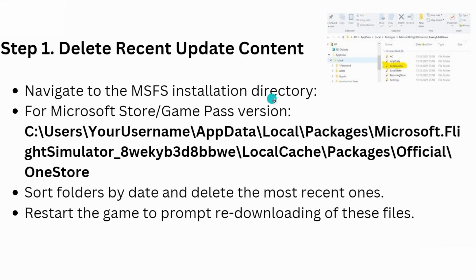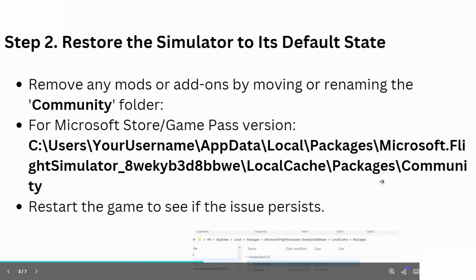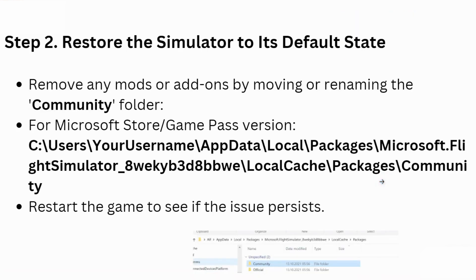First of all, delete your recent update content. Navigate to the Microsoft Flight Simulator installation directory — for Microsoft Store this is the Game Pass version. Sort folders by date and delete the most recent ones, then restart the game to prompt re-downloading of these files.